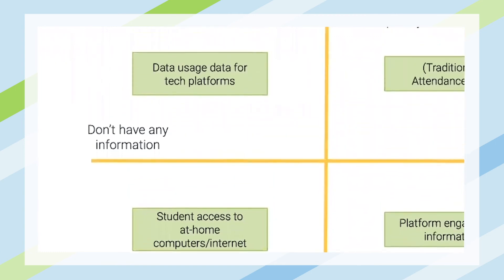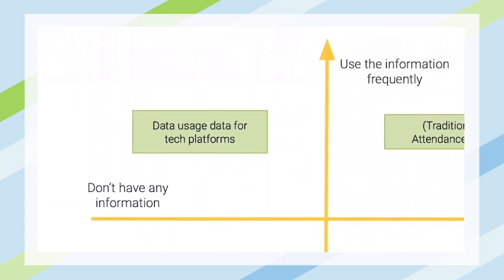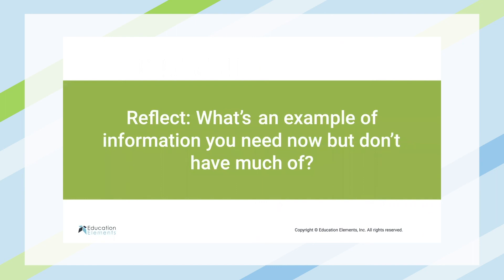An example of information we don't have but would use frequently if we did: a district leader in Texas mentioned they're using hotspots for internet for kids at home and found that some hotspots are draining data very quickly. They suspect certain platforms are draining data faster than others — and probably for kids not using hotspots, it's draining at-home data as well. They're asking questions about data usage of the platforms, but they just don't have that information yet. This is a great example of how decisions about what to collect and what to use will need to change to solve that challenge.